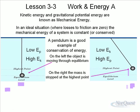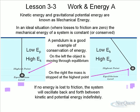On the left, the object is moving through the equilibrium position. On the right, the mass is stopped at the highest point. If no energy was lost, the system would oscillate back and forth indefinitely. But there's no such thing as a perfect system. We can use that concept to help us understand conservation of mechanical energy and reach an ideal, such as superconductors that reduce friction so much it's almost negligible. That's a quick overview of mechanical energy.